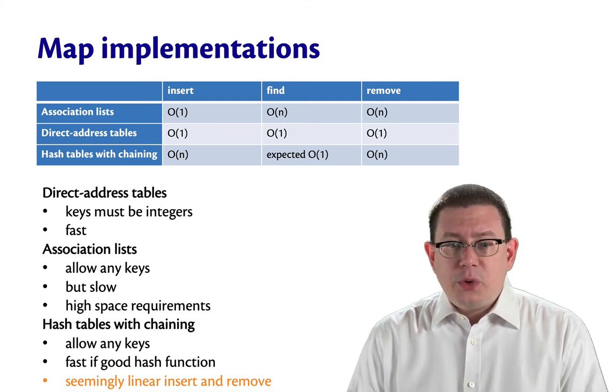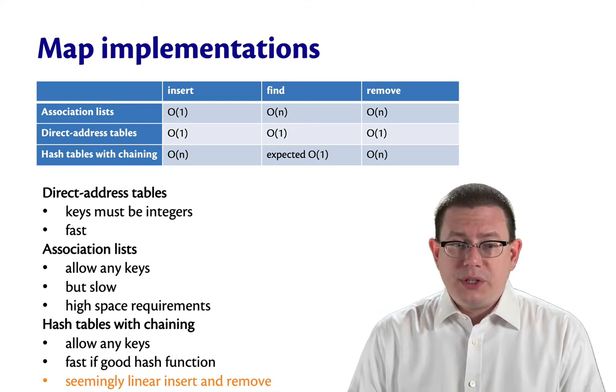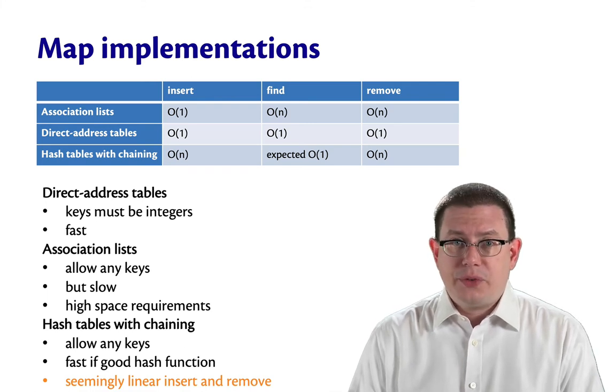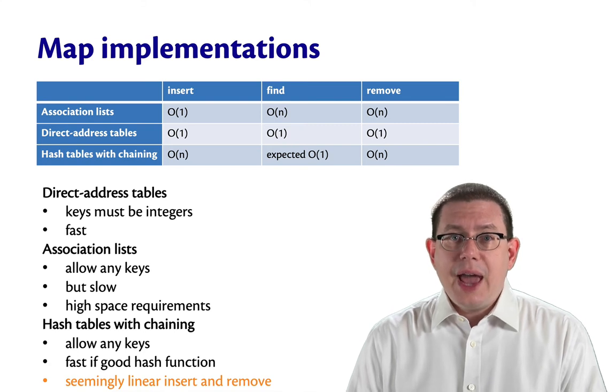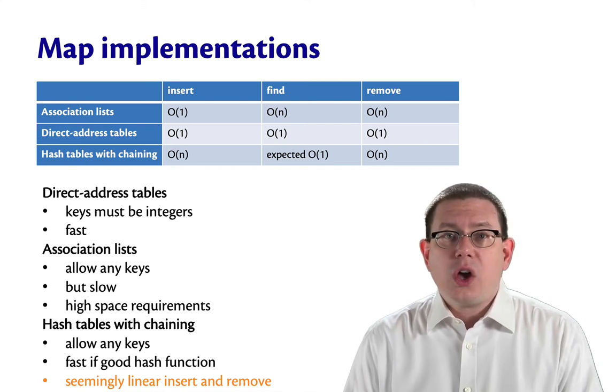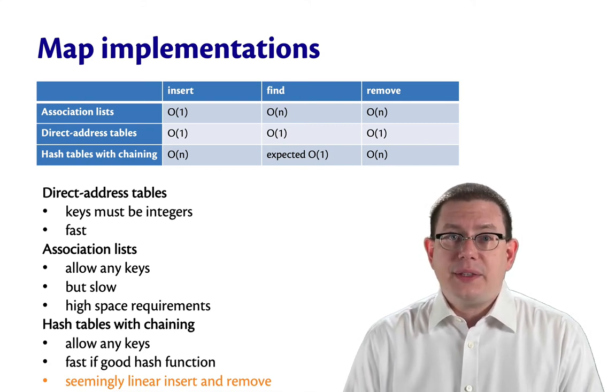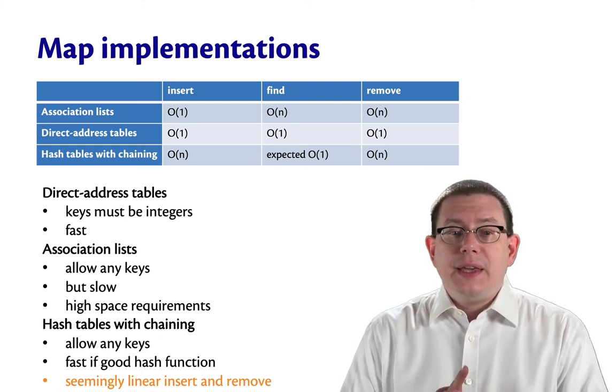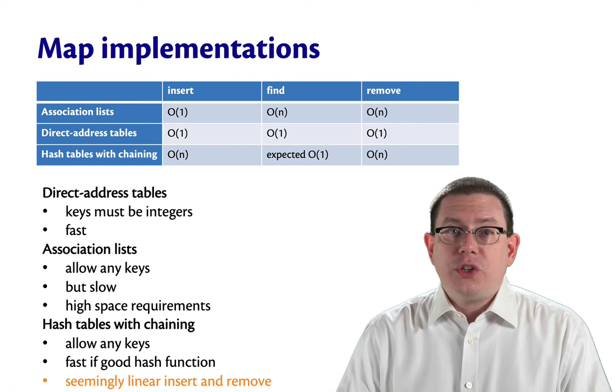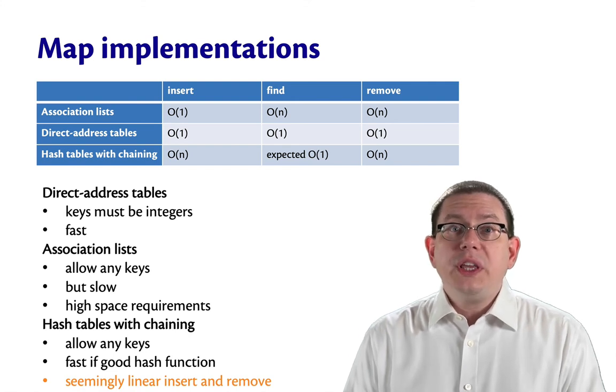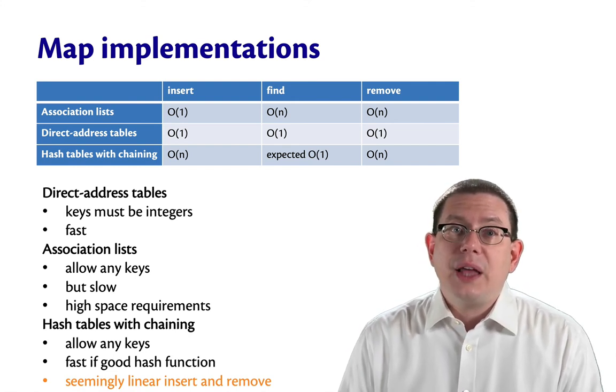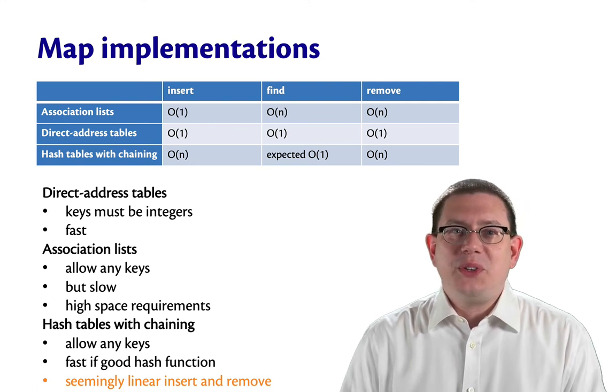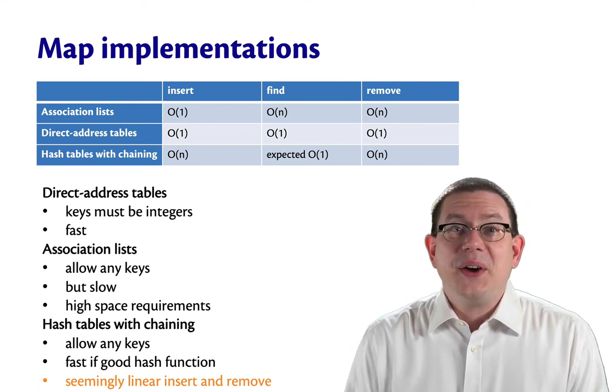For hash tables with chaining, that makes them worse than association lists and worse than direct address tables. What we're going to see next week is a technique called amortized analysis in which we can actually conclude that the insert and remove operations for hash tables are really constant time, not linear time. But that's something to look forward to next week. We'll get there soon enough.